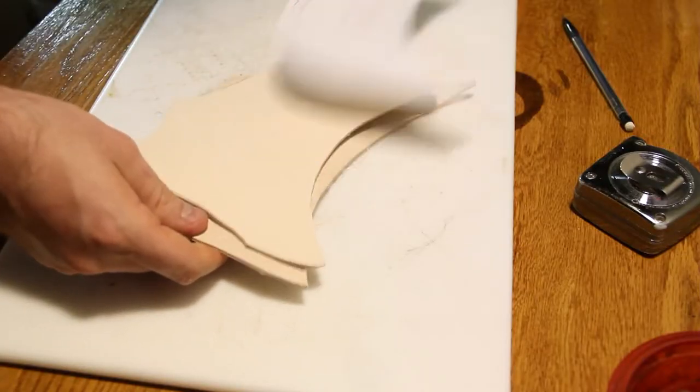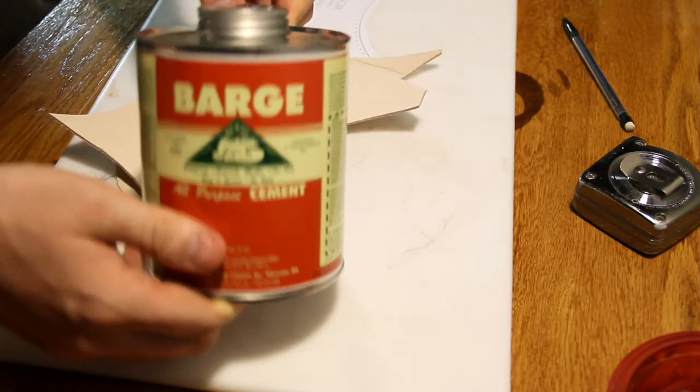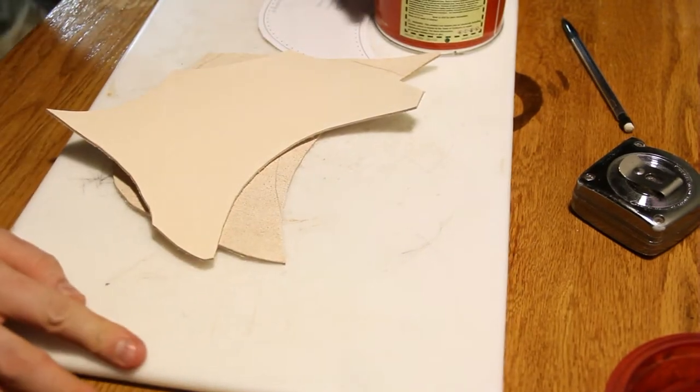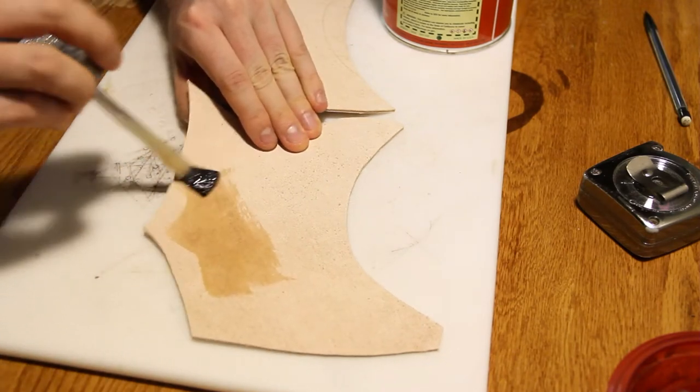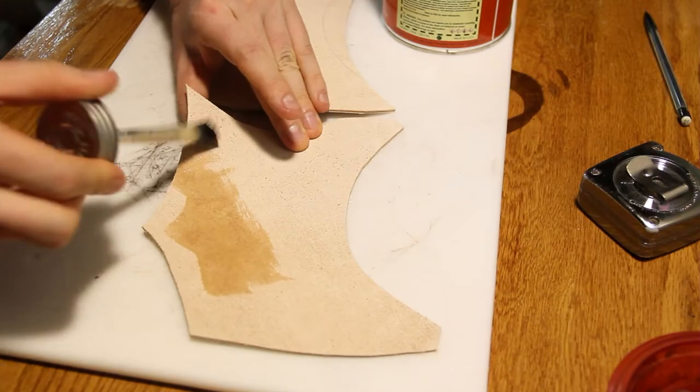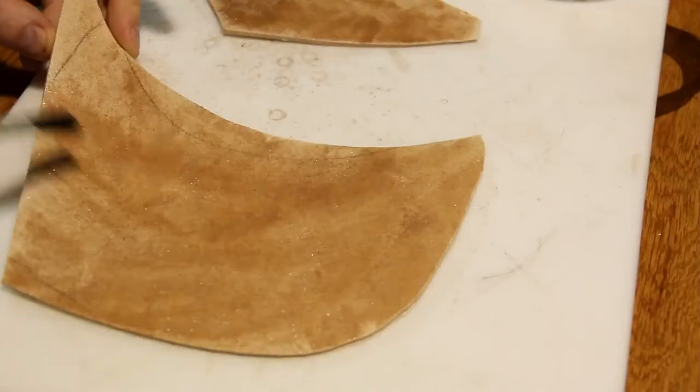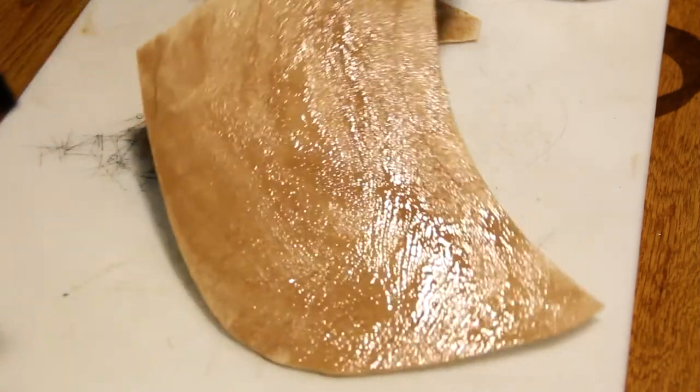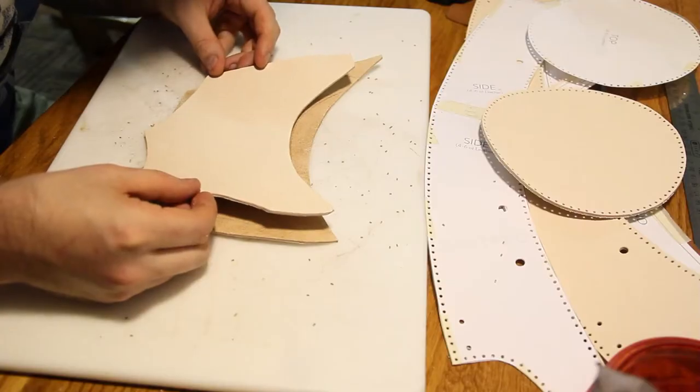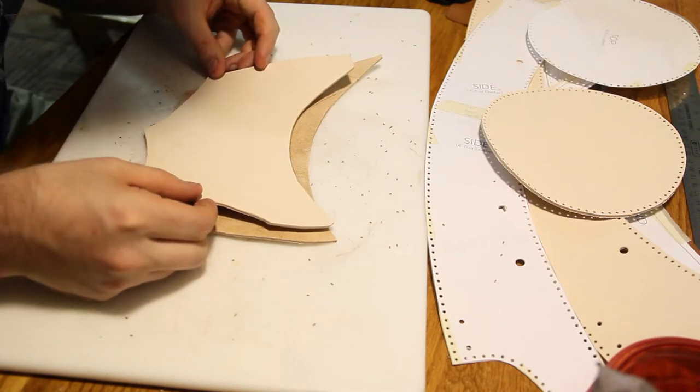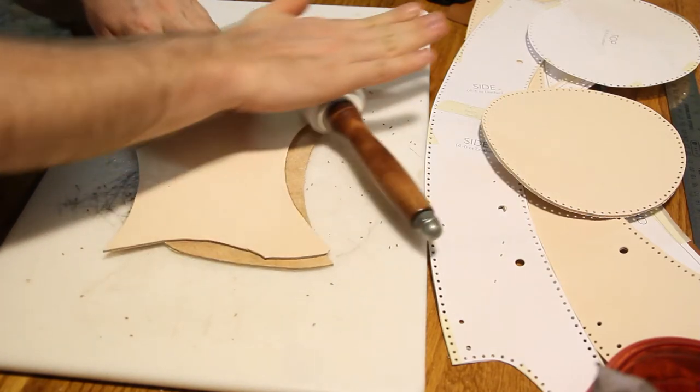For the visor, I'm gluing two pieces together. I'm using barge cement. You're going to want to coat both parts. If you have access to a thicker piece of leather, you could skip this step and just use that piece. Now set aside and let it dry for 10 to 15 minutes. Take your time putting these two pieces together because once it's together, you're going to have a hard time pulling it apart.